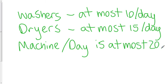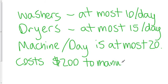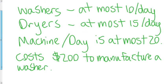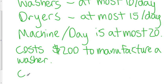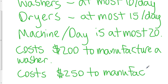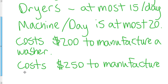And let's also say that it costs $200 to manufacture a washer and that it costs $250 to manufacture a dryer.